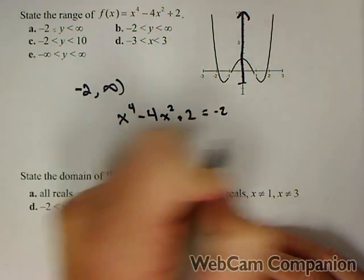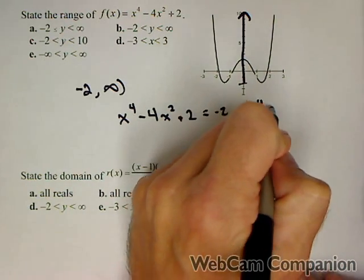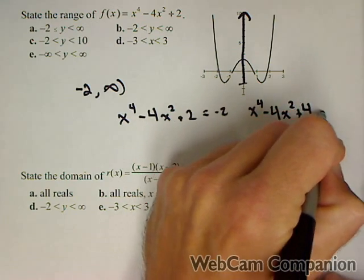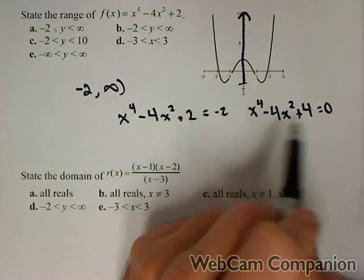Add this to both sides, and you get x to the fourth minus four x squared plus four equals zero. And the question is whether or not this can be solved.